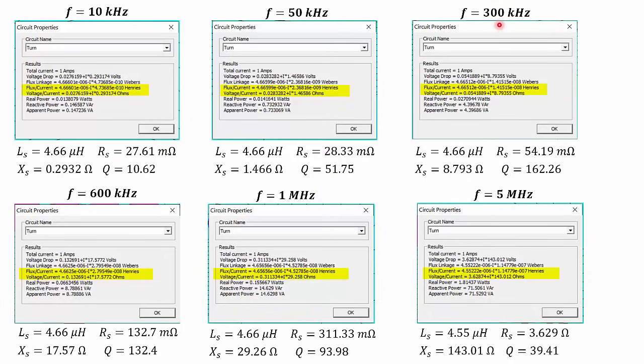At 300 kilohertz, we have even a higher quality factor, 162. At 600 kilohertz, here the quality factor starts decreasing. 1 megahertz, even lower, and 5 megahertz, 39.4. So this is the behavior that we expect to have this WPT coil according to the information that we have from the data sheet.